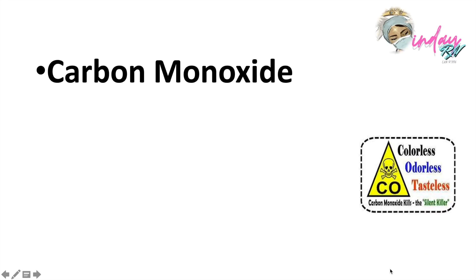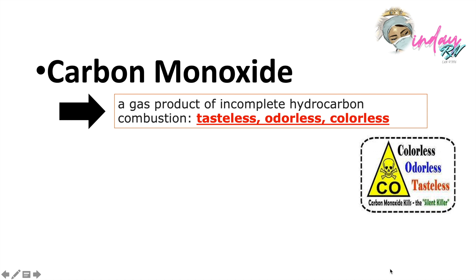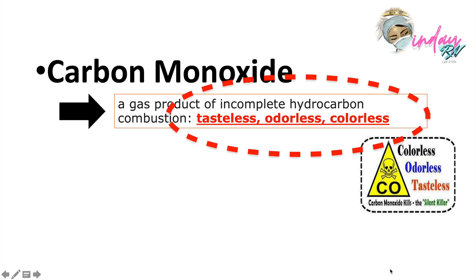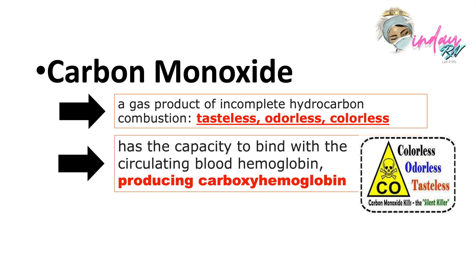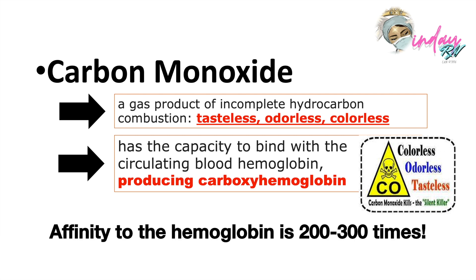Here in carbon monoxide poisoning, we need to discuss first what carbon monoxide is. Carbon monoxide is a gas product of incomplete hydrocarbon combustion. It is actually tasteless, odorless, and colorless — that is why we call it the silent killer. Carbon monoxide has the capacity to bind with circulating blood hemoglobin, producing carboxyhemoglobin. Its affinity to hemoglobin is 200 to 300 times greater than that of oxygen, so carbon monoxide has a much stronger bond to hemoglobin than oxygen does.